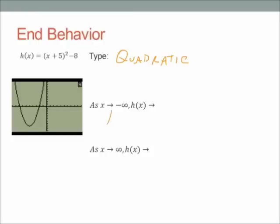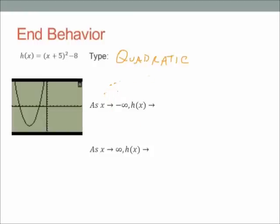So let's do end behavior. As x approaches — and that arrow means the word 'approaches'; mathematicians are lazy, they don't like to write any more than they need to, so instead of writing the word 'approaches' they'll just put an arrow. As x approaches negative infinity, that means x gets smaller and smaller, going farther and farther to the left. As x approaches infinity, what is the y value doing? H of x really just means y.